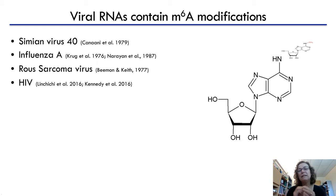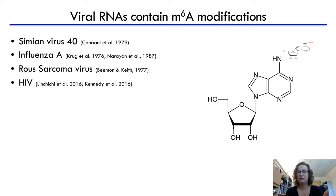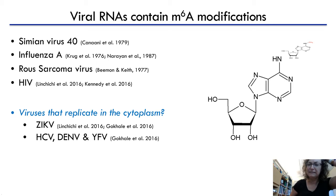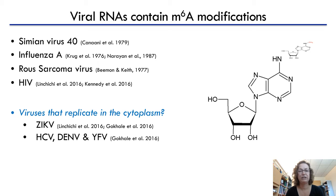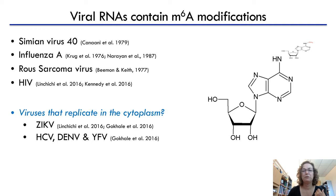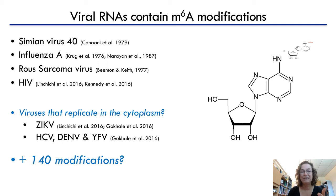One thing to note about those four virus examples is that all of them replicate in the nucleus. What about viruses that replicate in the cytoplasm — can these be modified? Beautiful studies from Stacey Horner's lab at Duke showed that hepatitis C virus, or HCV, can also be modified with M6A, which is important for packaging viral RNA into virions and for regulating the innate immune response. We also know that Zika virus, Dengue virus, and yellow fever virus harbor the M6A modification. But again, there are more than 140 modifications — so what are the others doing?